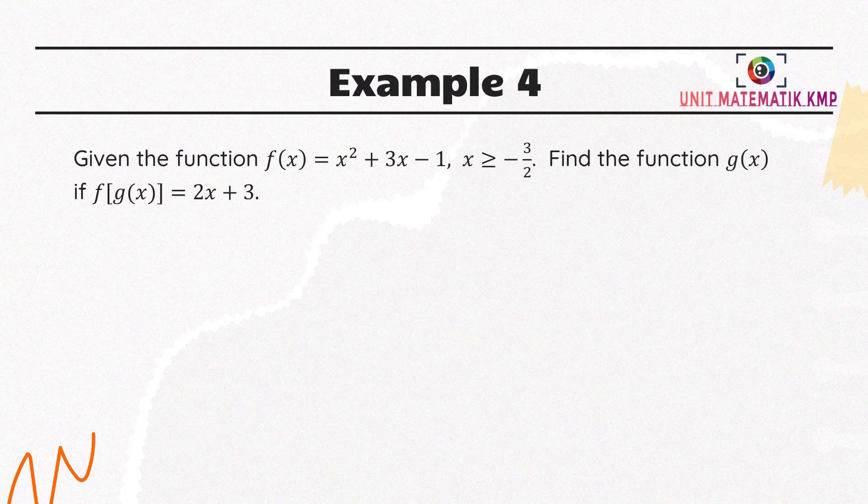Example 4: given the function f(x) equals x squared plus 3x minus 1, for x greater than or equal to negative 3 over 2, find the function g(x) if fg(x) equals 2x plus 3.